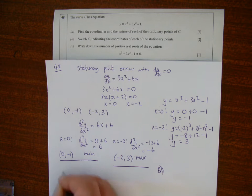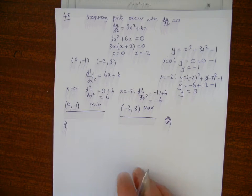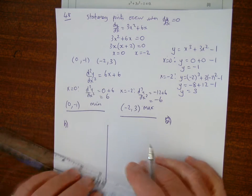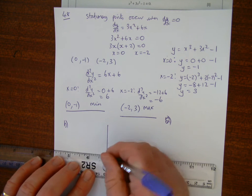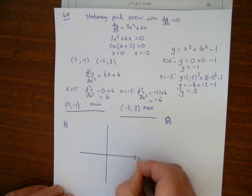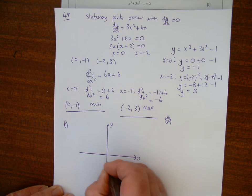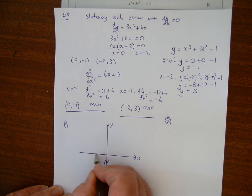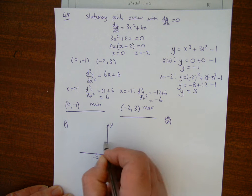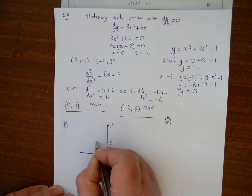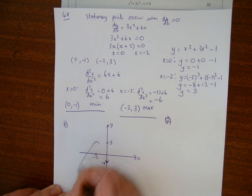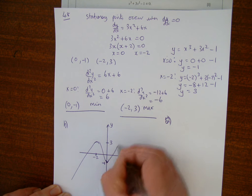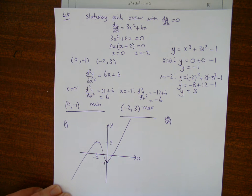Part b: sketch the curve. The minimum is at (0, -1) and the maximum at (-2, 3). The graph goes down to the minimum, back up through the maximum, and continues upward.